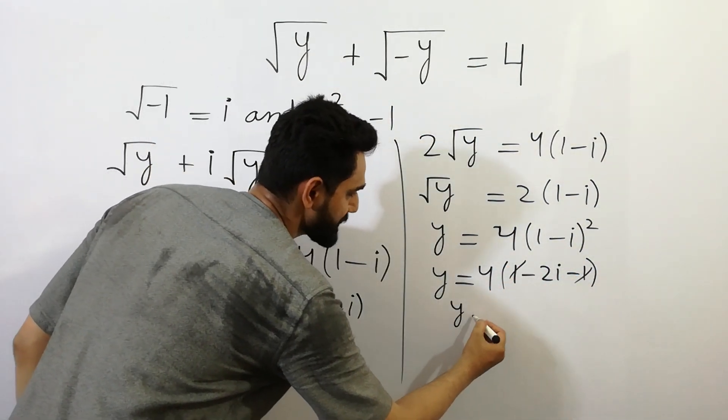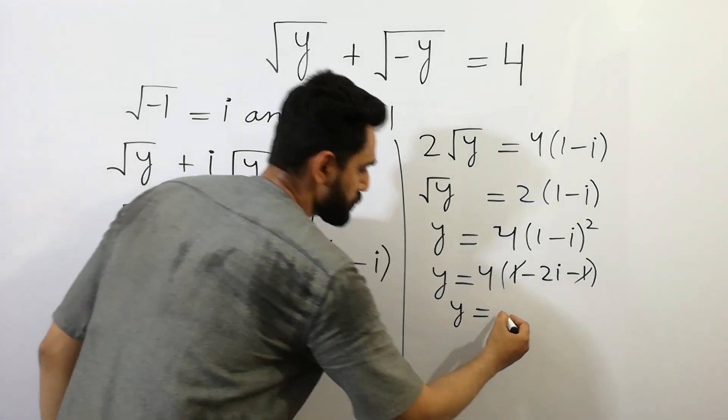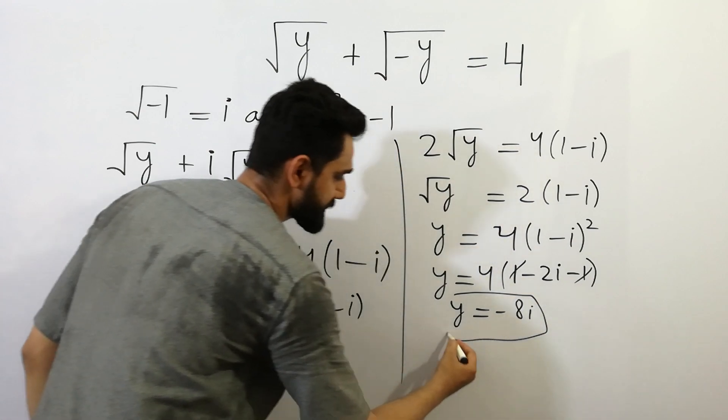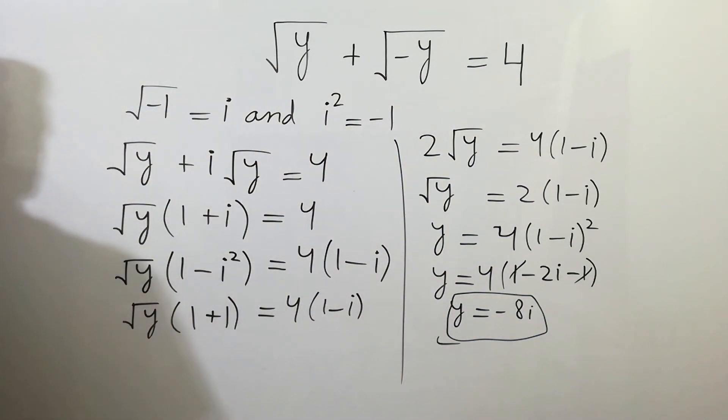We will get y is equal to 4 times minus 2i, which is minus 8i. So that's our right answer, okay, bye.